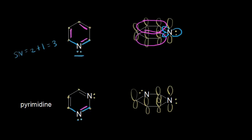The lone pair of electrons on each nitrogen — since they are sp2 hybridized — occupies an sp2 hybridized orbital, not the p orbital. So for both nitrogens in pyrimidine, the lone pairs are localized to those nitrogen atoms and do not participate in resonance. Pyrimidine has a total of 6 pi electrons that are delocalized as the p orbitals overlap side by side around the ring. So pyrimidine is also aromatic, meeting the criteria, with the lone pairs on both nitrogens remaining localized.